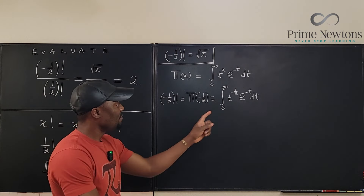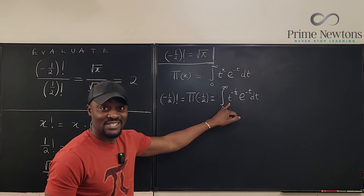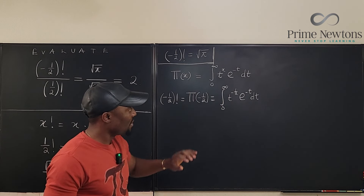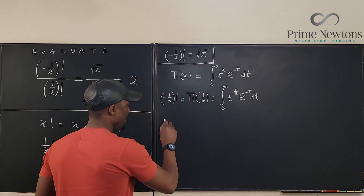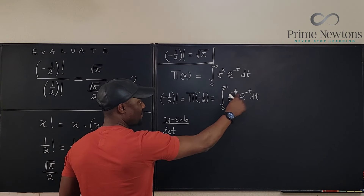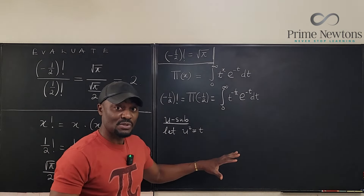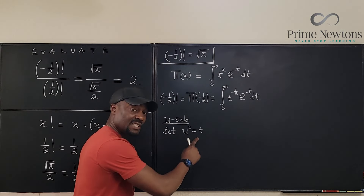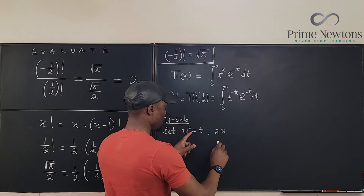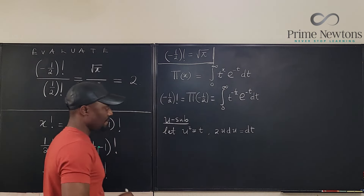We'll need u-substitution because there's no direct way to integrate this, and integration by parts won't make it easier — it won't reduce to zero because of the t^(−1/2) term. To handle the half-power, let u² = t. Differentiating both sides gives 2u du = dt.